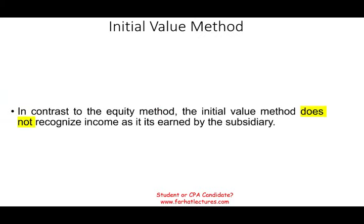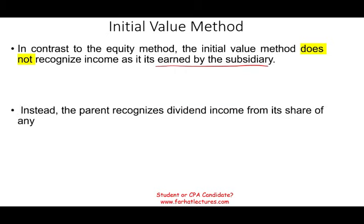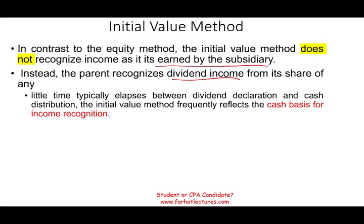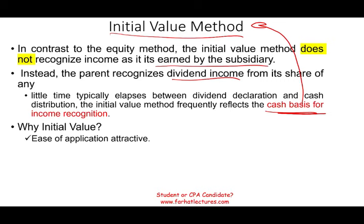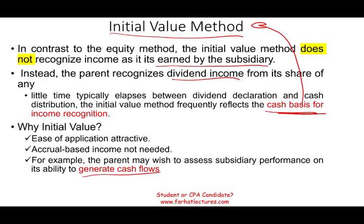The initial value method, in contrast to the other two, does not recognize any income as it is earned — we don't use the accrual method. Instead, we wait until the subsidiary pays the dividend, recognizing dividend income as it is paid. To a great degree, the initial value method measures the subsidiary's performance under the cash basis of accounting. The reason to use it is ease of application — we simply wait to receive cash from them without needing to measure performance on an accrual basis.